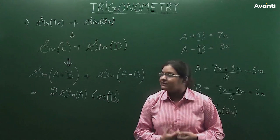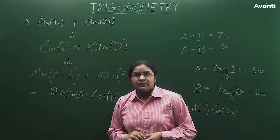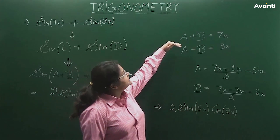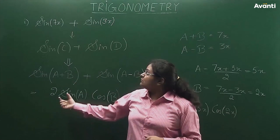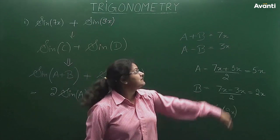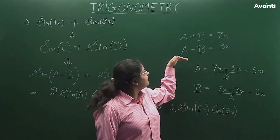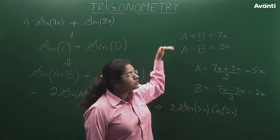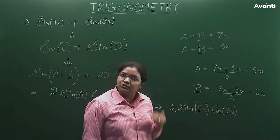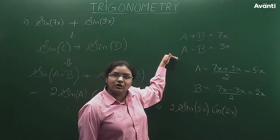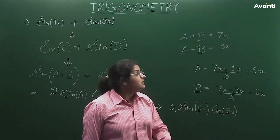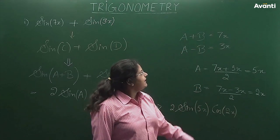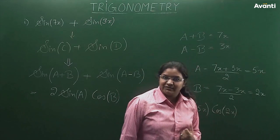I have the values of c and d, so I will do a comparison. I know that a+b equals c, which is 7x, and a−b equals 3x. Now I have two equations and two unknowns. If I add both equations, b cancels out and my value of a will be 5x.